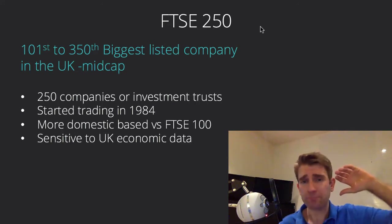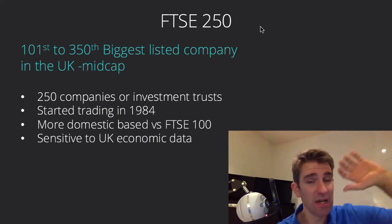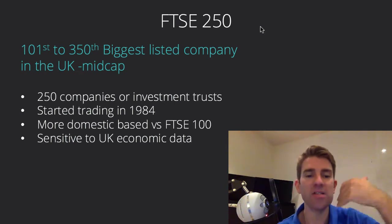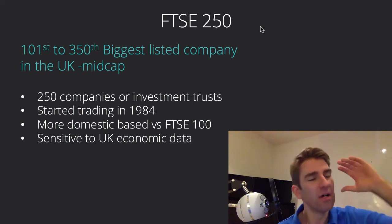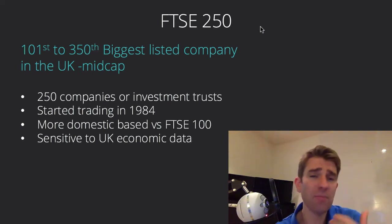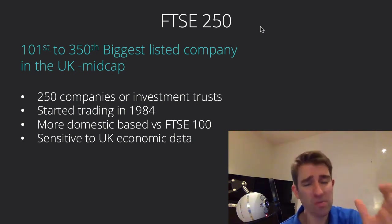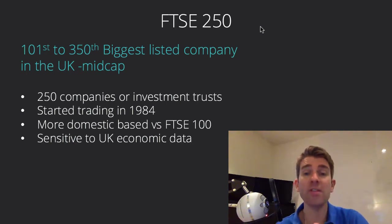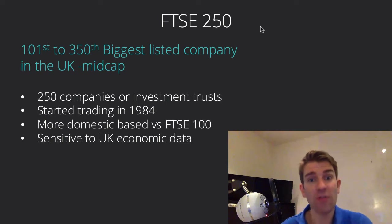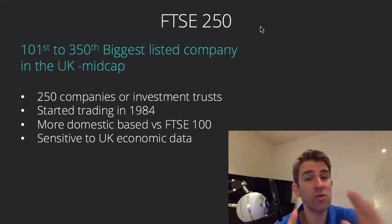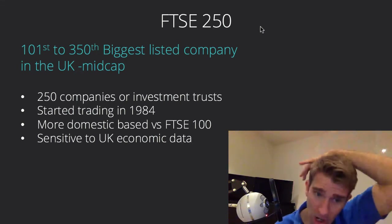It's known as the mid-cap index because it's not the large-cap or super high-cap like the FTSE 100 — it's the medium shares. These companies are more domestically based; they're not doing much business abroad. It's considered more of a barometer of the UK's economy than the FTSE 100. Also worth noting: the FTSE 350 is not the next 350 after that — it's the FTSE 100 and FTSE 250 combined.